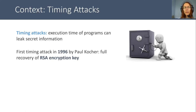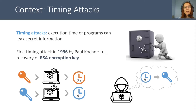For the context, in 1996, Paul Kocher introduced a new class of attacks called timing attacks. These attacks are based on the fact that an attacker can infer information on secret data by looking at the execution time of a program. It happens when the execution time depends on the secret. For instance, if a program executes in 3 seconds with an orange key and in 9 seconds with a blue key, then an attacker that monitors the execution time and gets 9 seconds can infer that the blue key was used.